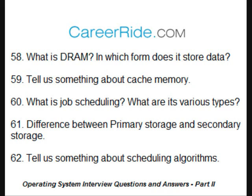Tell us something about scheduling algorithms. Scheduling algorithms decide which processes in the ready queue are to be allocated to the CPU for execution. They can be classified into the following types: first come first served, shortest job first, shortest remaining time algorithm, non-preemptive priority scheduling, preemptive priority scheduling, round robin scheduling, highest response ratio next algorithm, multi-level feedback queue scheduling algorithm, and multi-level queue scheduling algorithm.